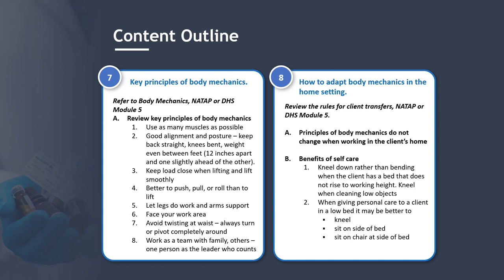Section 7: Key Principles of Body Mechanics — refer to NATAP or DHS Module 5. Key principles include: use as many muscles as possible; maintain good alignment and posture; keep your back straight, knees bent, weight even between the feet, 12 inches apart and one slightly ahead of the other; keep the load close when lifting and lift smoothly; it's better to push, pull, or roll than lift; let legs do the work and arms support; face your work area; avoid twisting at the waist; always turn or pivot completely around; and work as a team with the family or others, with one person as the leader.